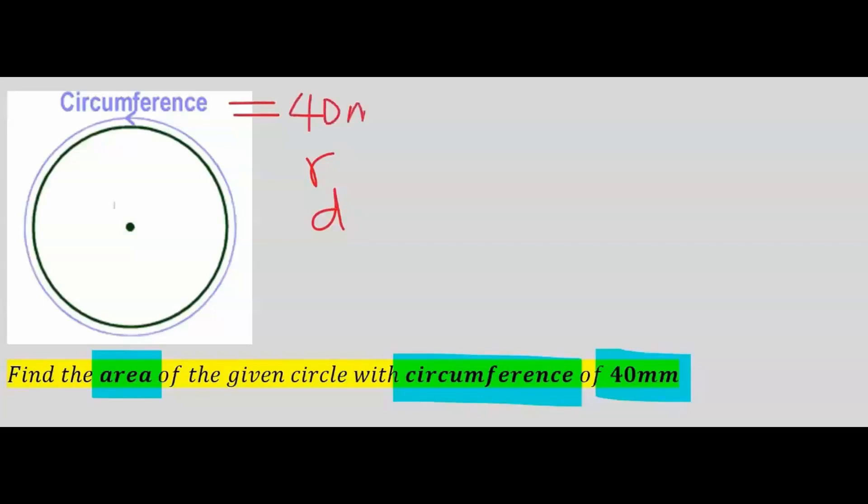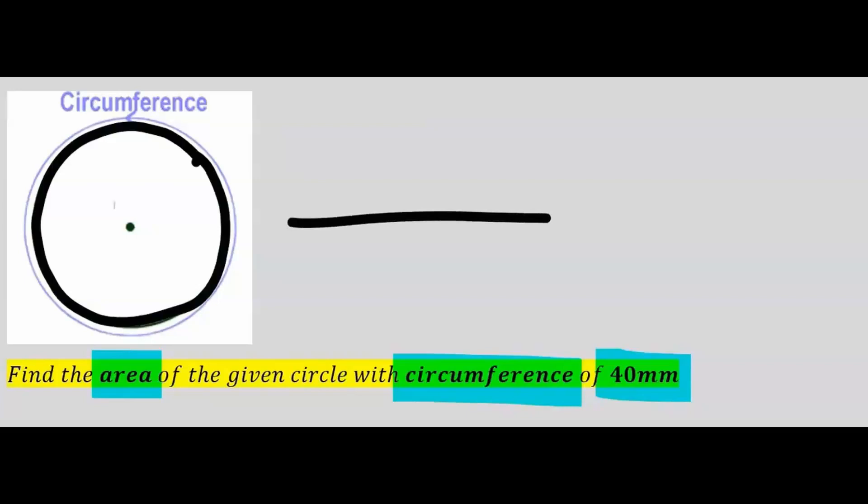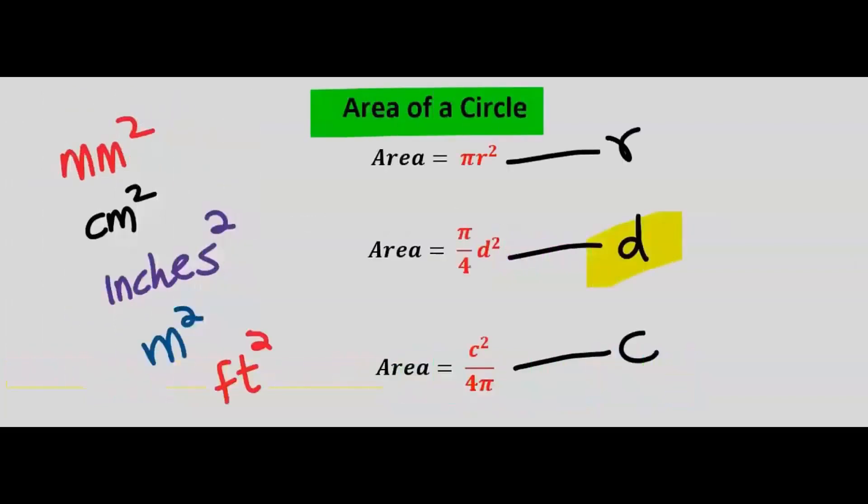The perimeter is 40 millimeters - the total length of the circle if you have to unroll it. We can still find the area of the circle. For the area with a given circumference, we're going to have